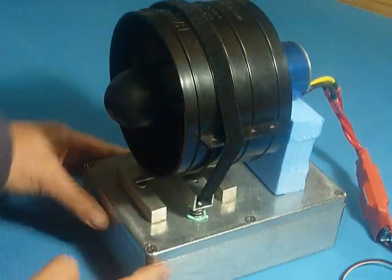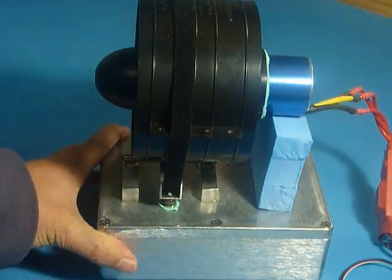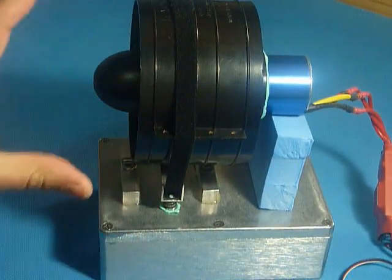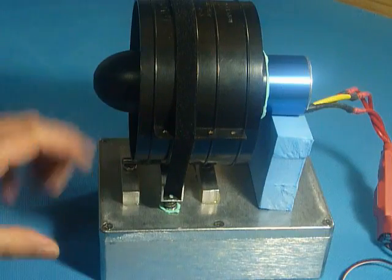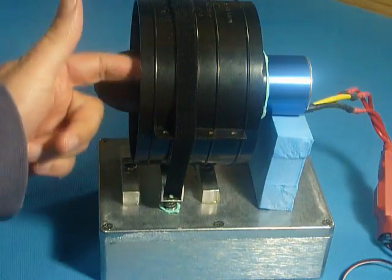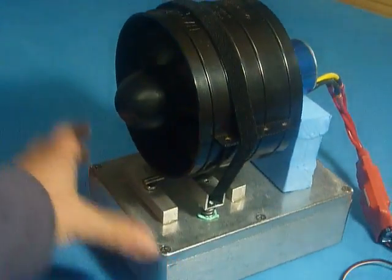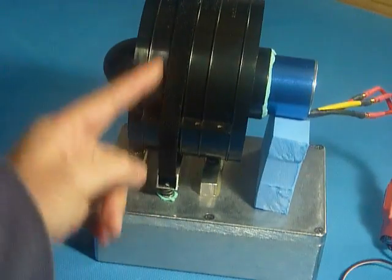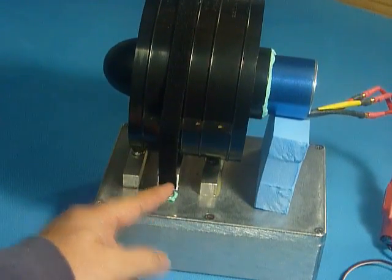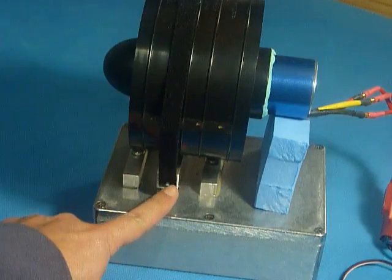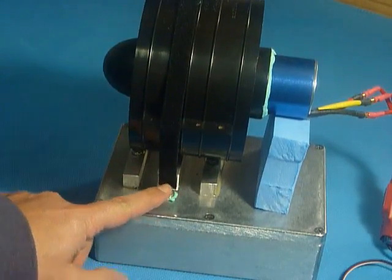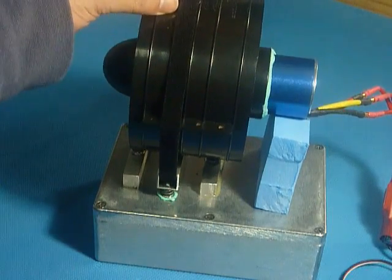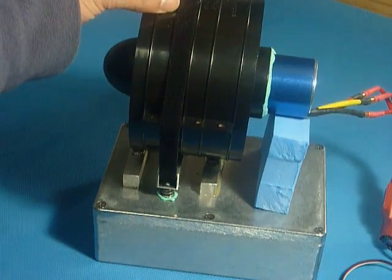Now just to show you why I have actually mounted the ducted fan unit the way it is: you want the mass of the fan vibration to be in line with the pivot point of the square tube. That's basically to magnify the effect of the vibration or oscillation at the point where the sensor is located.